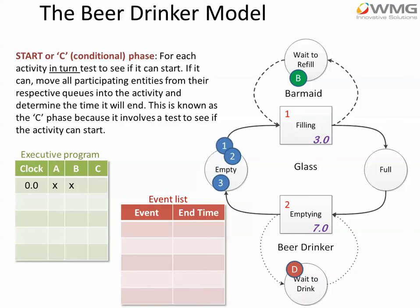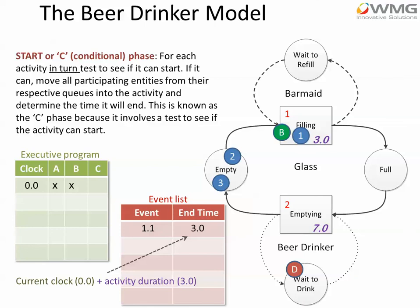So we take an entity — an empty glass, glass number one — and the barmaid, and we can now schedule that in the event list. Activity one for glass one, denoted as one dot one, will end at time three — that's clock time zero plus activity duration three. Then we ask can anything else start — can we start filling again? The answer is no, because there's no token in the wait-to-refill queue. We also look at activity number two, the emptying activity, but that can't start either because although we've got a beer drinker waiting, there's no full glass, so we can't start emptying. That's exhausted the whole of the start phase.